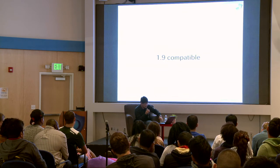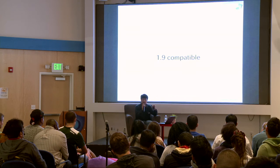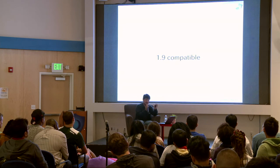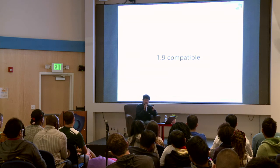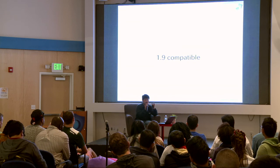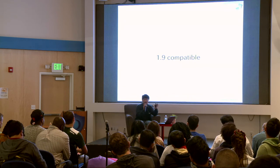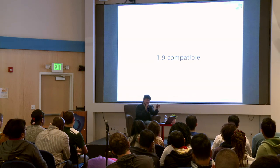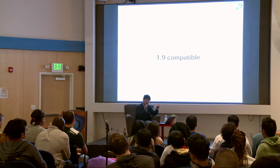MRuby is fundamentally Ruby 1.9 compatible. We don't yet have all Ruby 2 fancy features, but we are working on it and adapting Ruby 2 features gradually.